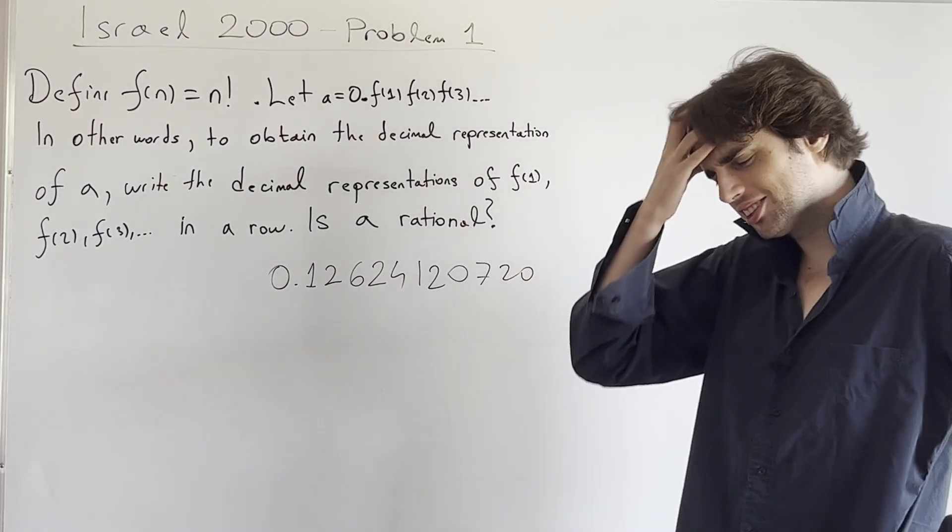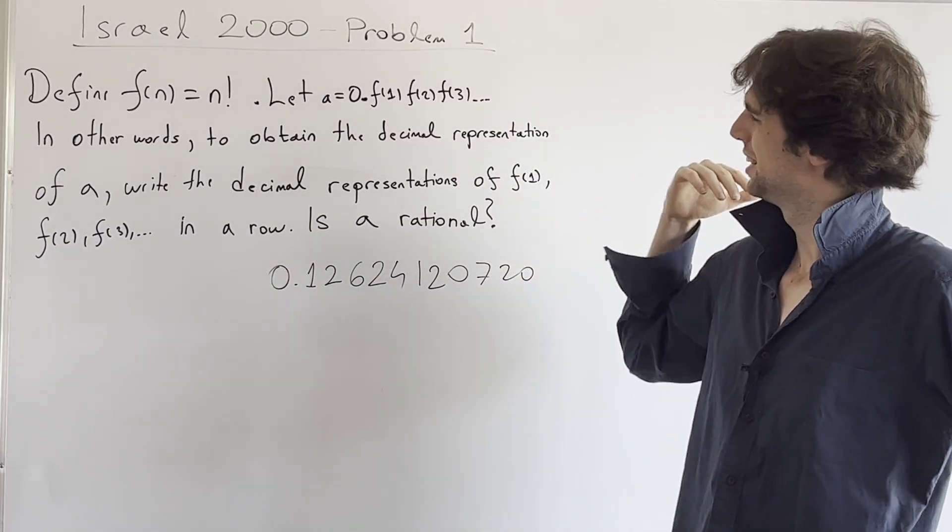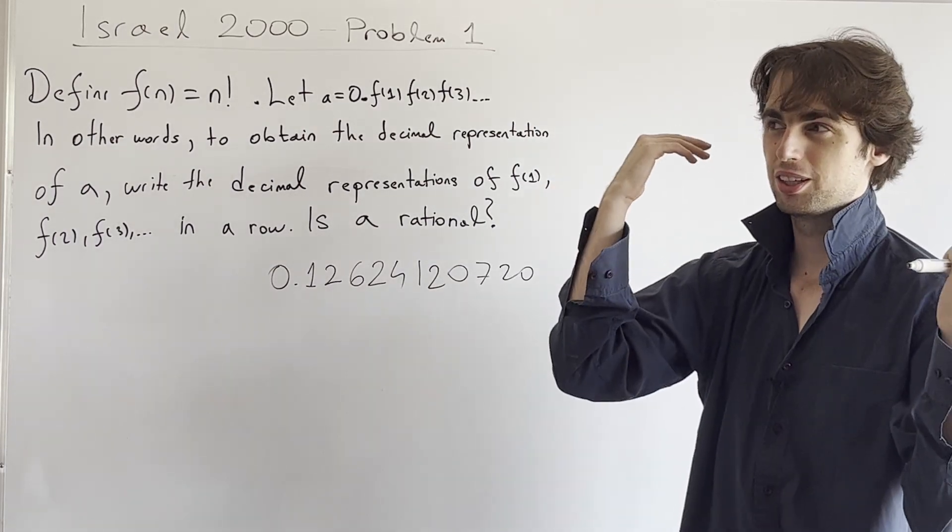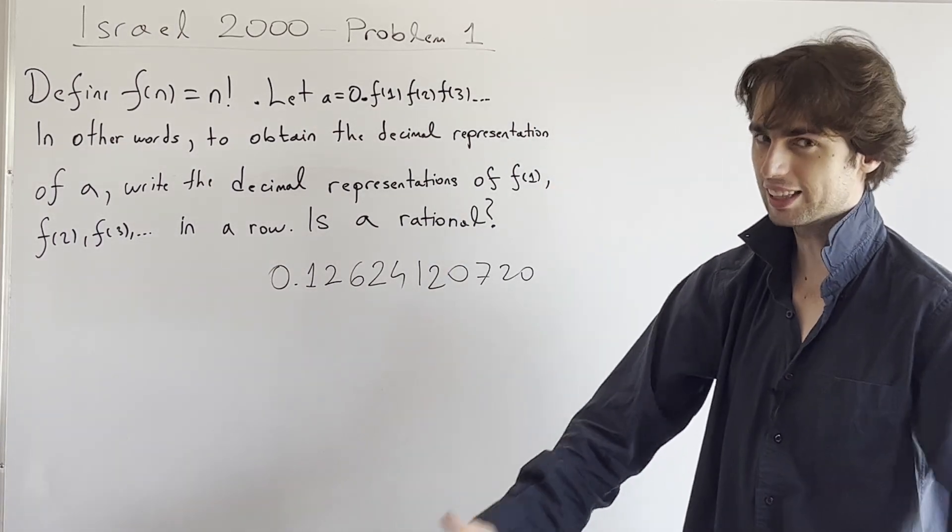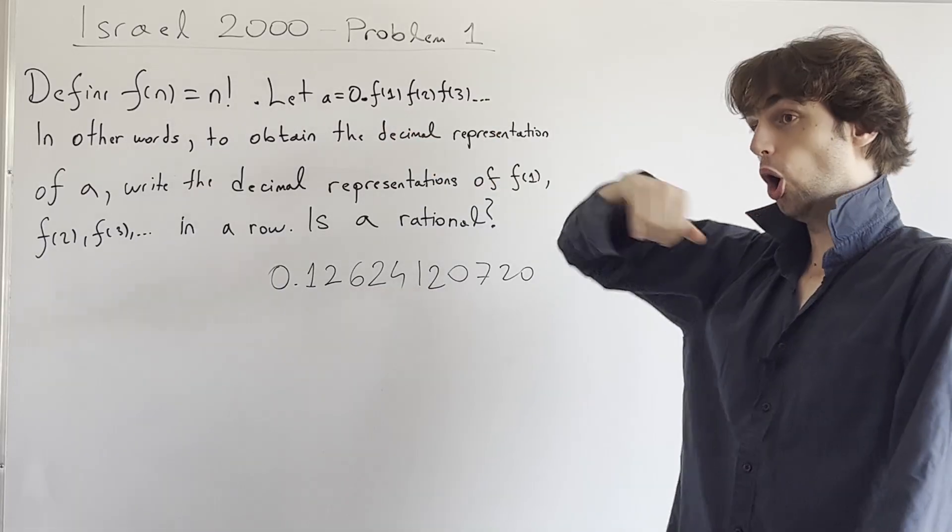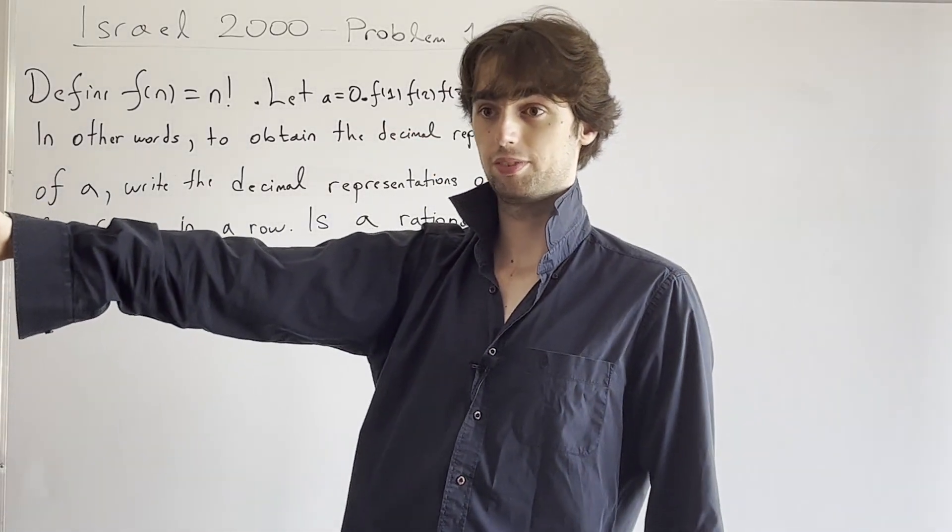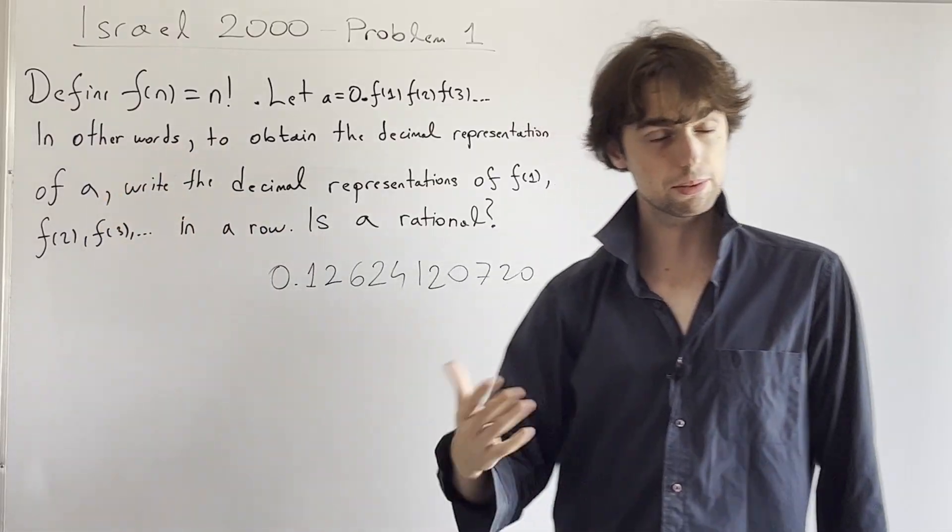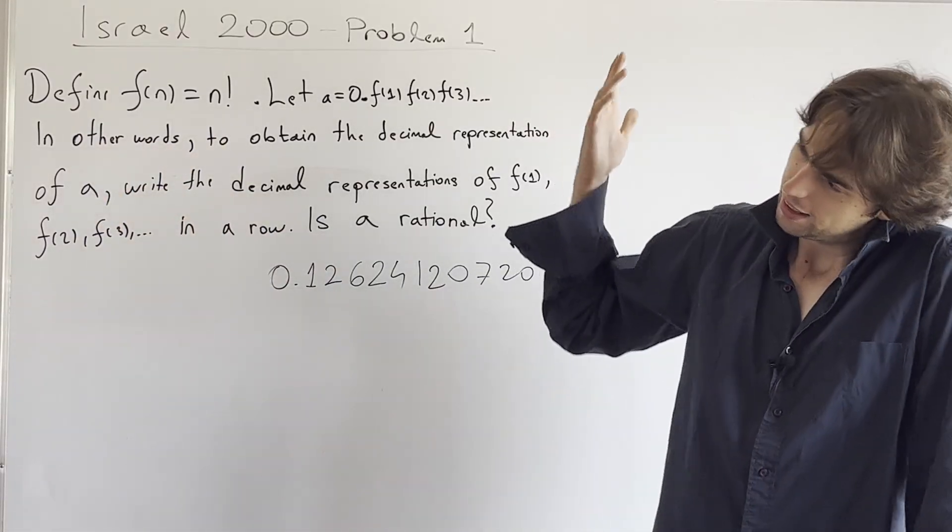But you also have to ask yourself when you're looking at this problem is, is there any M and N which seem to make sense? Like, think about it. This is all the numbers that all the factorials for every N. I mean, I don't...